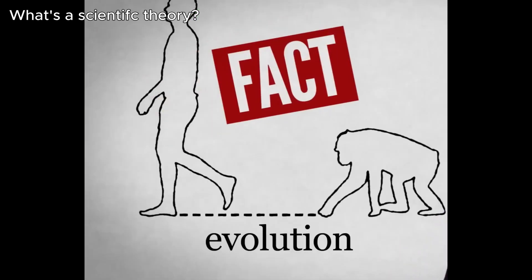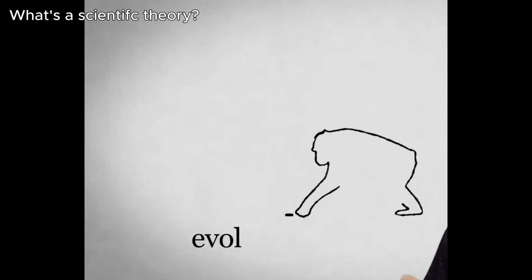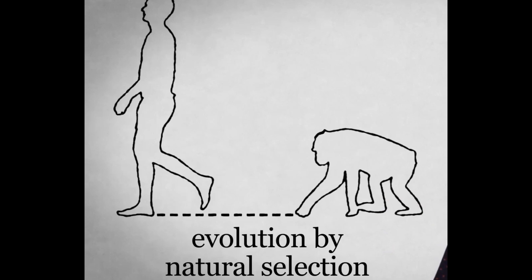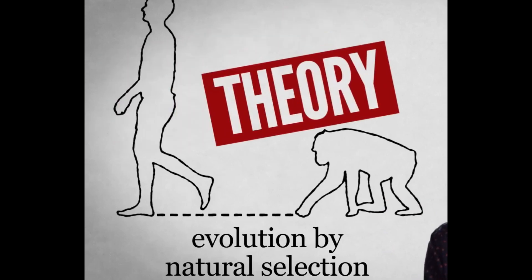So it's very important to recognize the difference. Evolution itself is a fact that we observe, it's genetic changes over time. And the theory of evolution via natural selection refers to the survival of the fittest, the explanation for the fact of evolution.